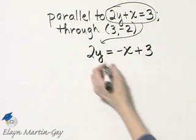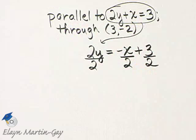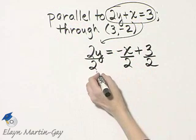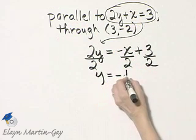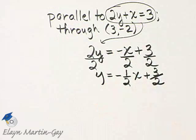And then to finish solving for y, I'll divide every single term by 2, the coefficient of y. So y is equal to negative 1 half x plus 3 halves.